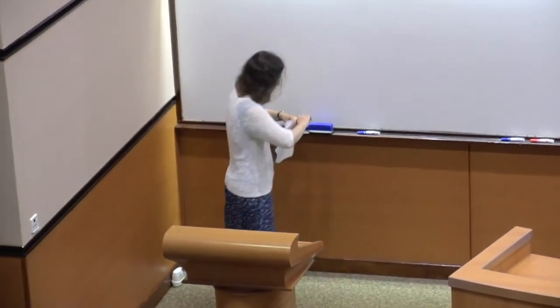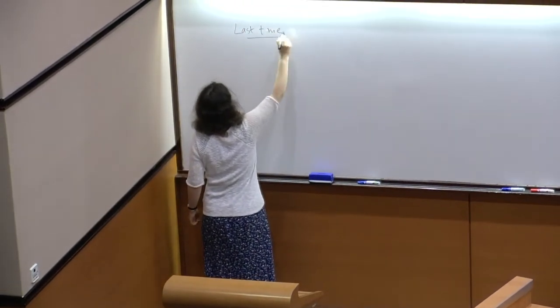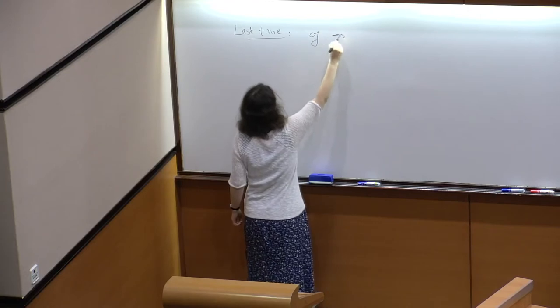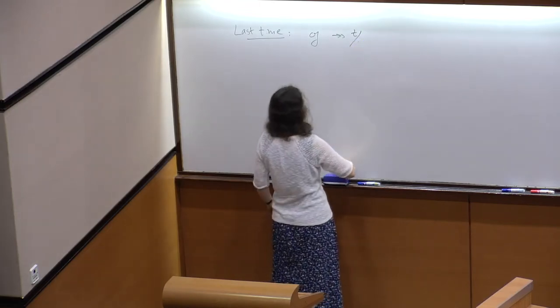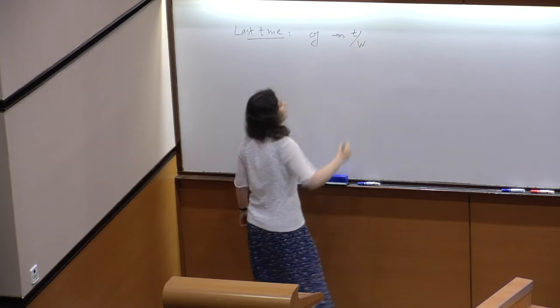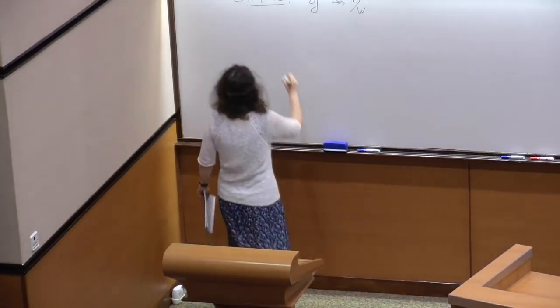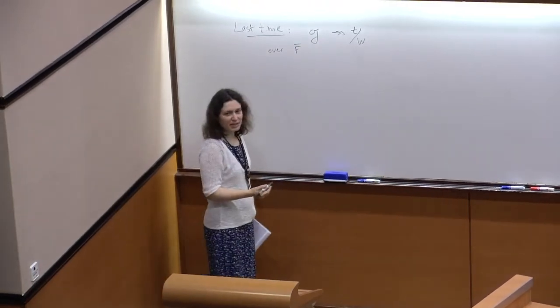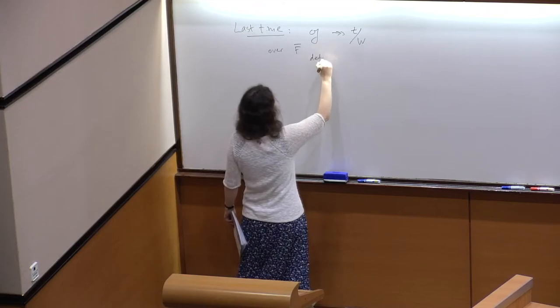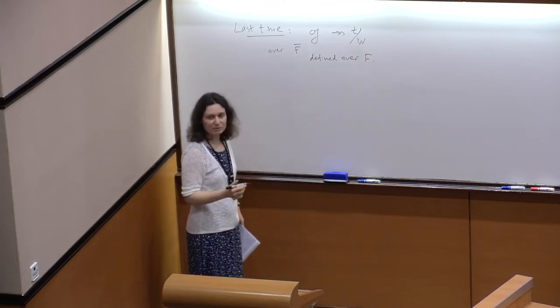Thank you again. So we stopped last time having constructed, for a Lie algebra, a surjection — this is the Chevalley map — to the Lie algebra of the Kortanzib algebra mod W. Remember this was all over an algebraic closure of our local field, but actually the map is defined over F.